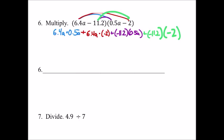Okay, so here we go. We got 6.4a times 0.5a, that's going to be 3.2a squared, plus 6.4a times negative 2, that's going to end up being a negative 12.8a.